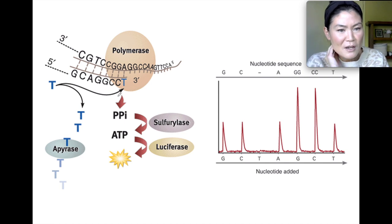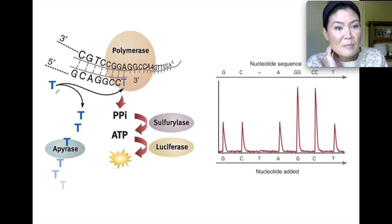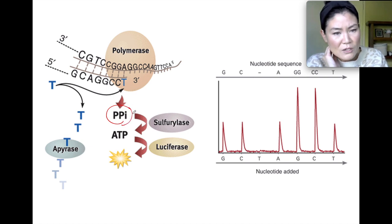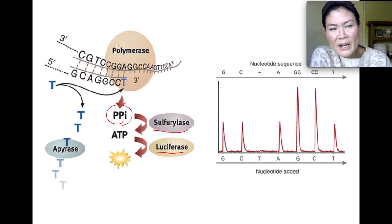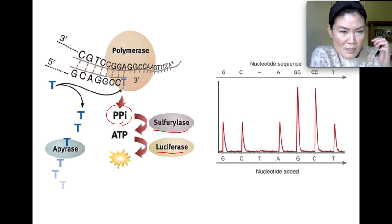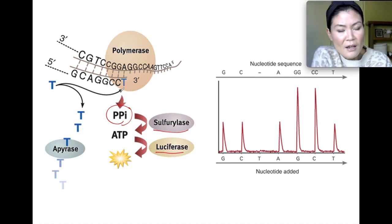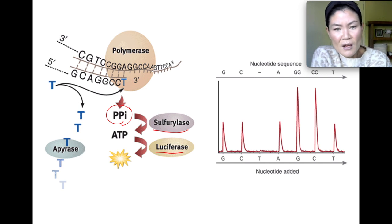They do the whole cycle again — adding adenine, thymine, guanine, and cytosine, rinsing each time while the computer looks for a flash of light. Here's a picture of the flash of light process: the TTP gets added by DNA polymerase, the two phosphate groups — pyrophosphate — turn into ATP using another enzyme called sulfurylase. ATP with luciferase then releases a flash of light. You don't need to know this chemical reaction — just know that every time a complementary nucleotide is added to the growing strand, there's a flash of light.